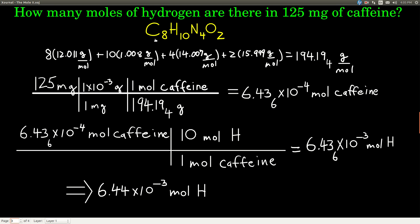So the first thing we need is the molar mass of caffeine. From the formula, there are eight carbons, 10 hydrogens, four nitrogens, and two oxygens. We look in the periodic table, find the molar mass of carbon and multiply by eight, add the molar mass of hydrogen times 10, nitrogen times four, and oxygen times two. We add those up and get 194.194 grams per mole. The four is a subscript because when we multiply hydrogen by 10, we get 10.08 to four sig figs, which is two places to the right of the decimal.